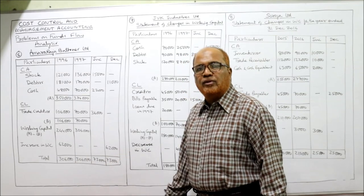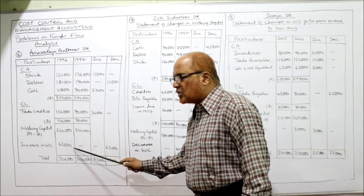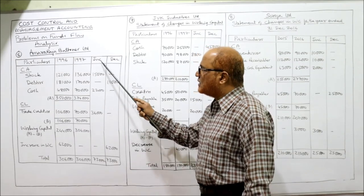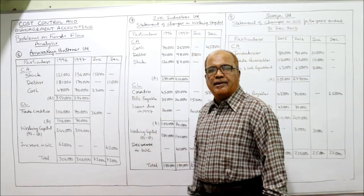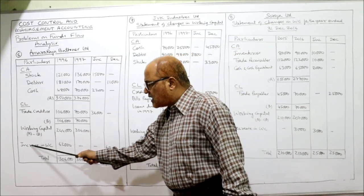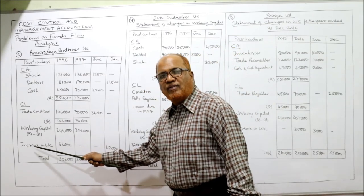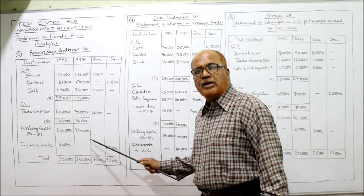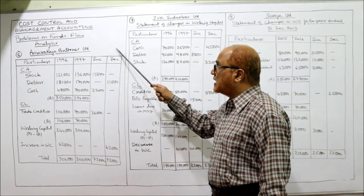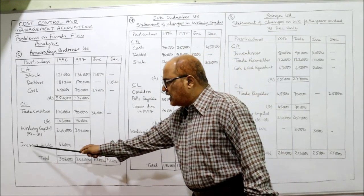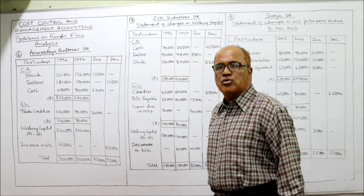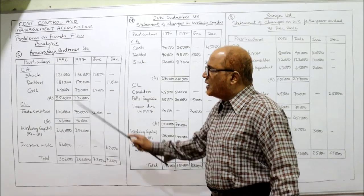To prove whether our answer of 62,000 is correct, we open the increase and decrease columns. The rule is: when there is increase in working capital, take the amount in the decrease column — opposite. For current assets: if current asset increases, put in increase column; if it decreases, put in decrease column. For current liabilities: opposite rule applies.